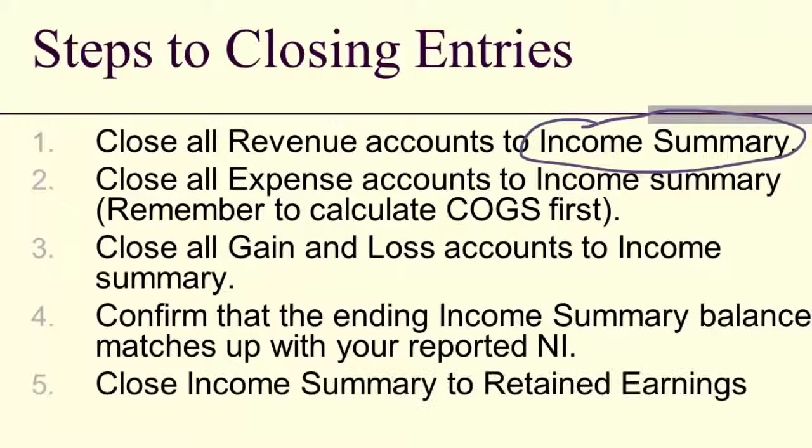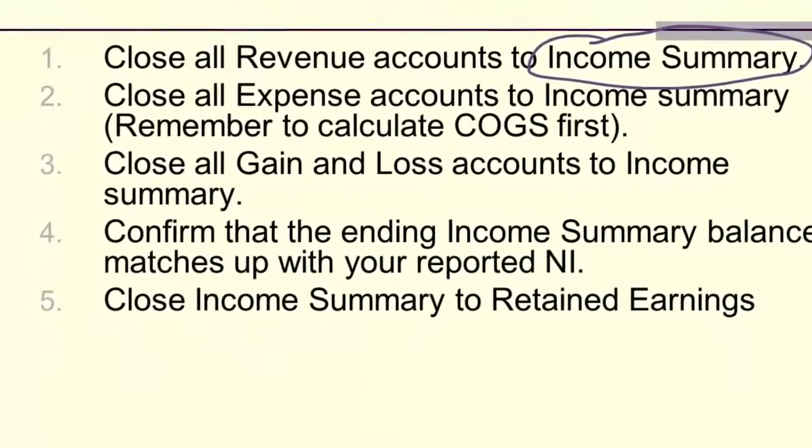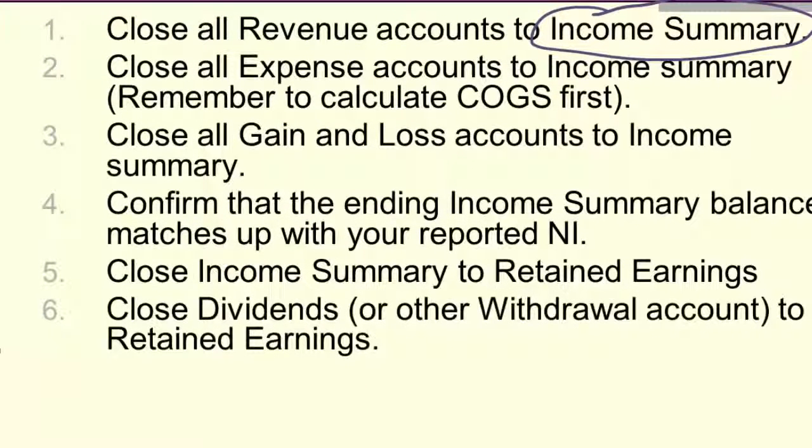Once I've got my gains and losses, revenues and expenses, I get a balance for that income summary account and I make sure that the balance matches with my net income. That's the whole point of using this income summary account. Once I'm sure it matches, then I close income summary into retained earnings. If I do it right and I've done everything right up to this point, income summary will only have a balance for about five minutes. Last but not least, I take my withdrawal or my dividend account and I close that into retained earnings, and that finishes off the process of closing entries.